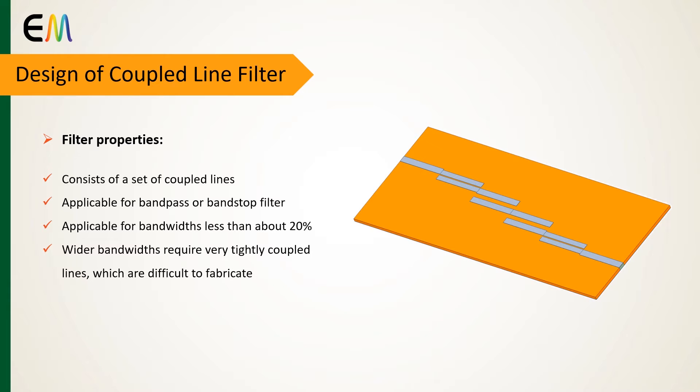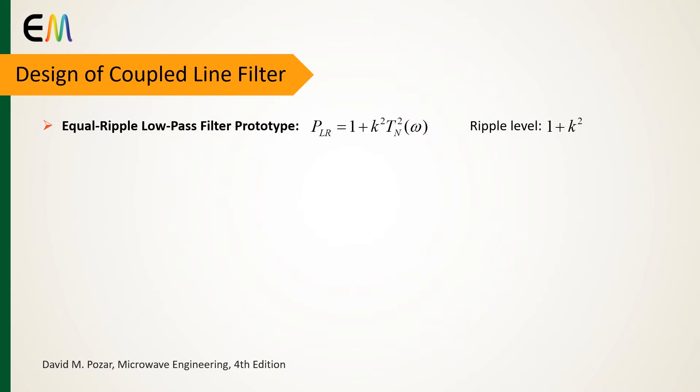Bandwidths less than about 20 percent are suitable. Wider bandwidths for these filters require very tightly coupled lines which are difficult to fabricate. In this video, our focus is on designing a filter with equal ripple response.